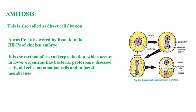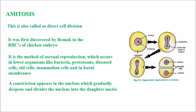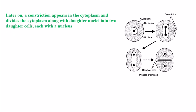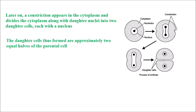A constriction appears in the nucleus which gradually deepens and divides the nucleus into two daughter nuclei, as seen in the diagrammatic representation. Later on, a constriction appears in the cytoplasm and divides the cytoplasm along with the two daughter nuclei into two daughter cells, each with a nucleus. The daughter cells formed are approximately equal halves of the parent cell.